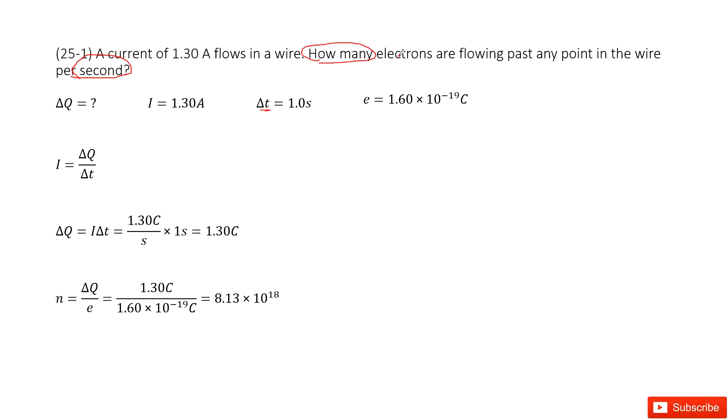We need to find the number of electrons. As we know, one electron carries one negative unit charge. This charge is e = 1.60 × 10^-19 coulombs.